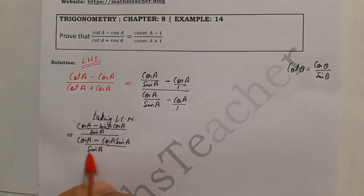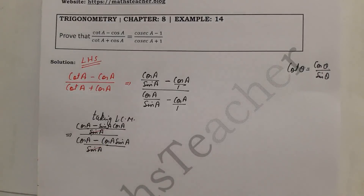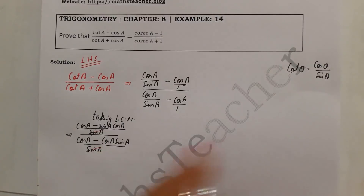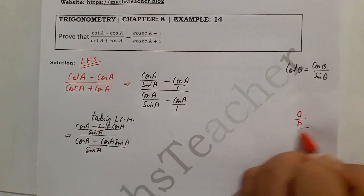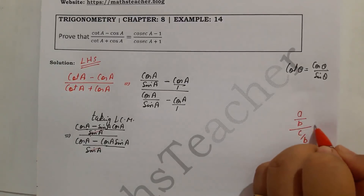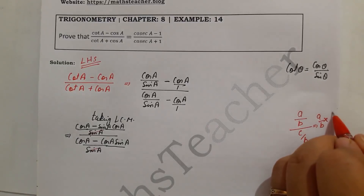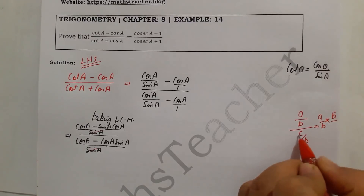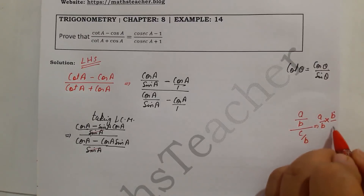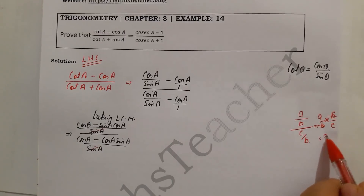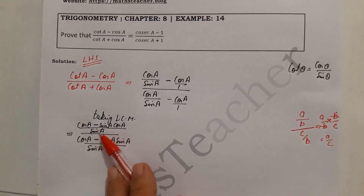Here you can see both denominators are the same, so you can cancel them directly. In the exam you have to solve questions in limited time, so practice properly and remember the steps. Here, a upon b divided by c upon b — if you write it as multiplication, a upon b times b upon c, then b cancels with b, giving a upon c. So the same denominator cancels.